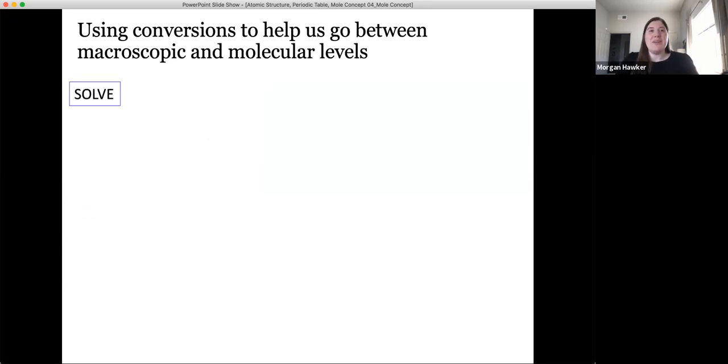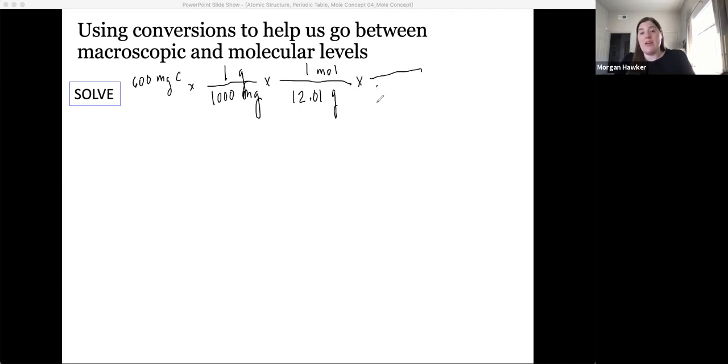Let's work through this. So first we need to start with our given, which is our 600 milligrams. And that's specifically of carbon. Now we need to convert to grams. So you'll remember from a previous video that 1000 milligrams is equal to one gram. Now we need to convert from grams to moles. This will require looking up the molar mass value for carbon on the periodic table, which is for carbon, 12.01 grams is equal to one mole. And you'll notice that I put the grams on the bottom here to cancel.